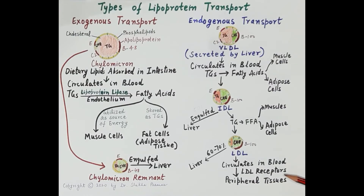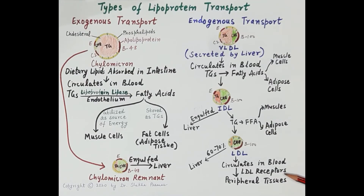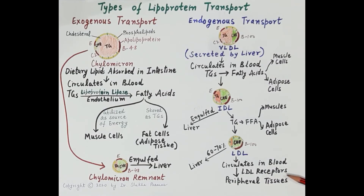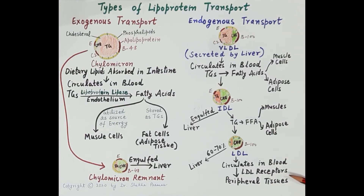Peripheral tissues utilize LDL for the synthesis of cell membranes, bile acids, vitamin D, or steroidal hormones. Excess LDL results in deposition of lipids in body tissues, termed xanthomas. Excess LDL also gets deposited in coronary blood vessels, resulting in atheroma — that is atherosclerosis — which is the main cause of coronary vascular diseases.